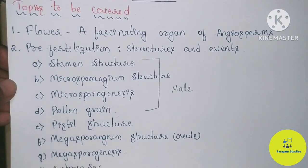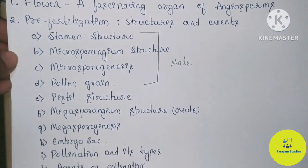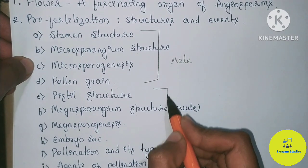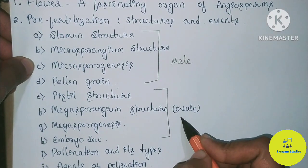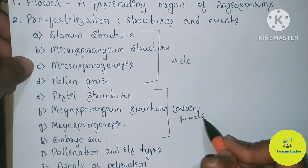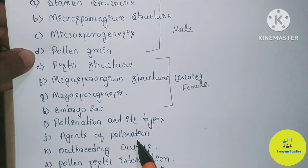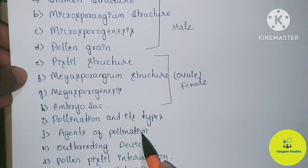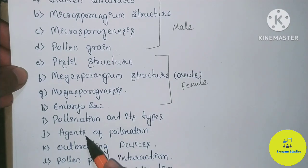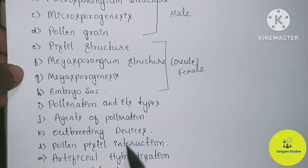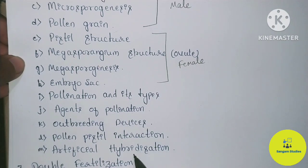Next is Pistil Structure, Megasporangium Structure, Megasporogenesis, and Embryosac. These four topics are related to the female reproductive part. Next is Pollination, Agents of Pollination, Outbreeding Devices, Pollen-Pistil Interaction, and Artificial Hybridization.